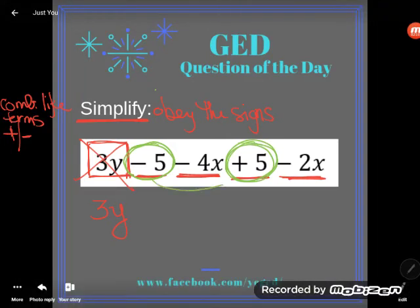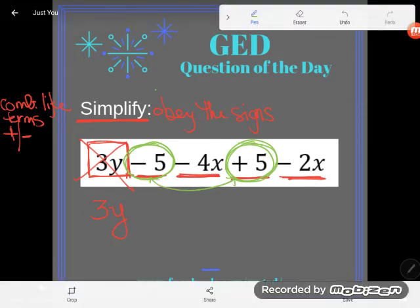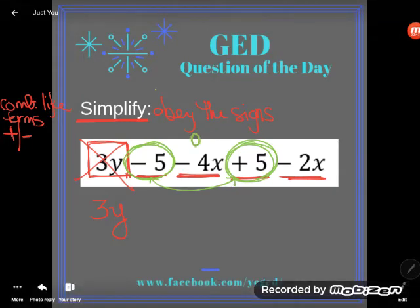So let's think about what we would get if we combine negative 5 and positive 5. Well I hope you know that negative 5 and positive 5 are additive inverses. They're opposites. So they come to 0.